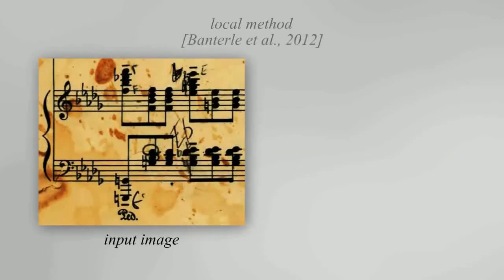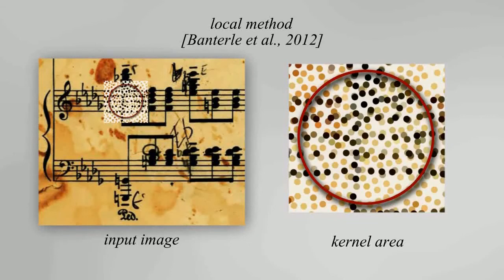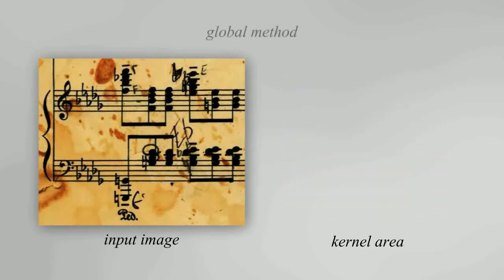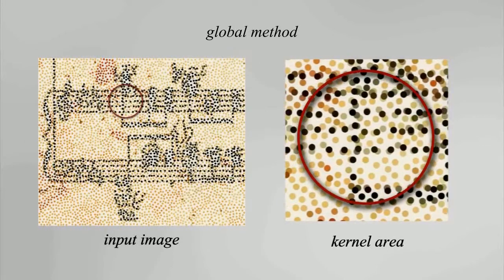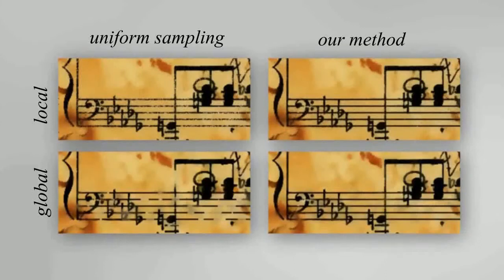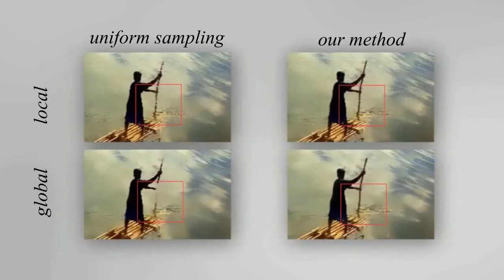We propose both local and global methods for our bilateral sampling. In the local method, samples are generated independently for each output pixel. In the global method, samples are generated together for the entire image. By taking features into consideration, our method produces results with less noise in the local method and less bias in the global method.